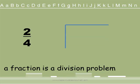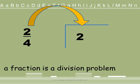A fraction is a division problem, so let me show you how it works. Here we have a fraction, 2 fourths. The 2 goes inside the house, so we can always remember that the top goes inside the house and the denominator goes outside the house. So 2 fourths is telling us that 2 is being divided by 4.